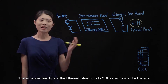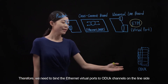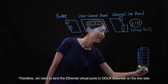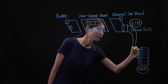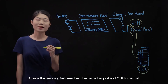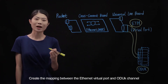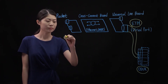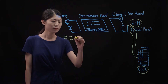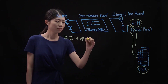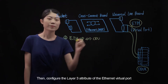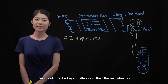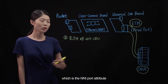Therefore, we need to bind the Ethernet virtual ports to ODUK channels on the line side, and create the mapping between the Ethernet virtual port and ODUK channel. Then configure the layer 3 attribute of the Ethernet virtual port, which is the NNI port attribute.